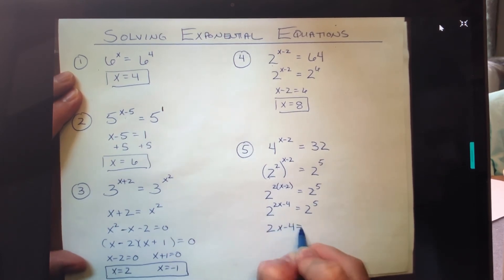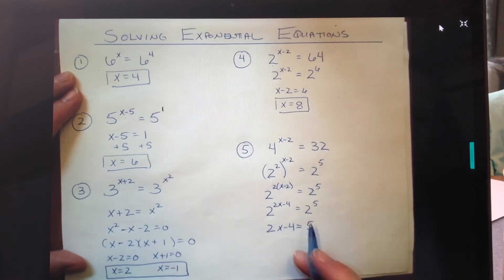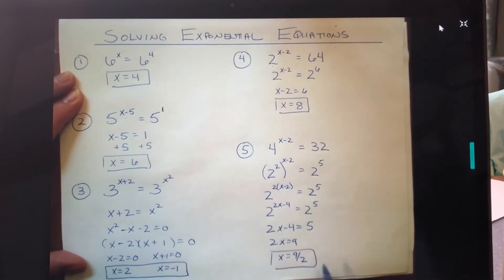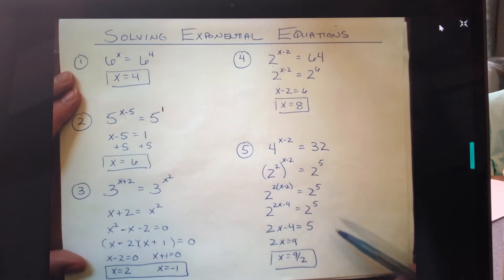Which I can do if I add 4 to both sides. I will have 2x equals 9. Divide both sides by 2, and we get x equals 9 halves, which is again a good illustration that sometimes we do get fractions as answers.